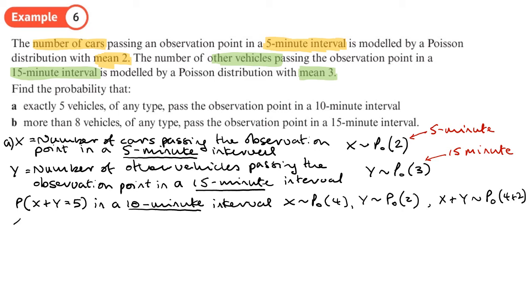With X + Y ~ Poisson(6), we use Poisson PD on the calculator — variable, x = 5, lambda = 6 — and we get 0.1606 to four decimal places.